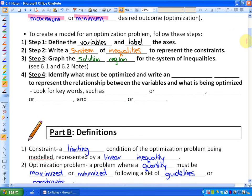To create the model for an optimization problem, the first three steps are things we've already done before. Define the variables and label the axes. Step two, write a system of inequalities to represent the constraints. Step three, graph the solution region. So basically, take a word problem to graph the solution region. It represents all of the possible combinations that satisfy the constraints.